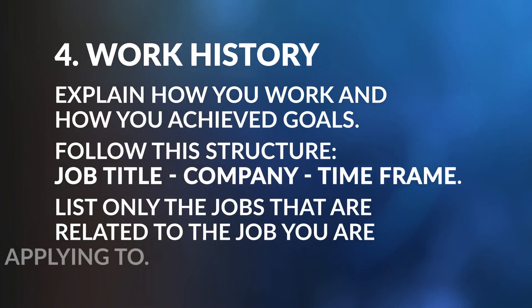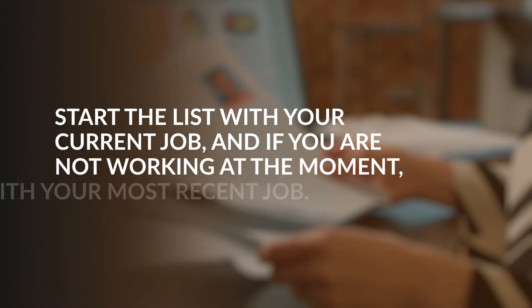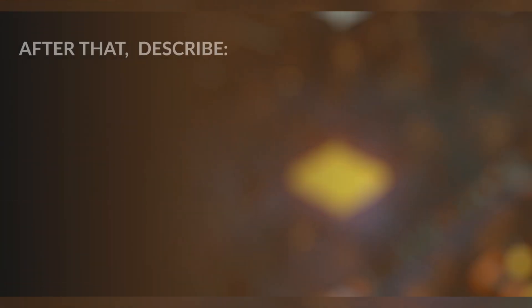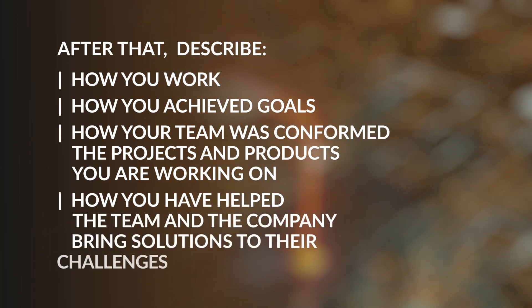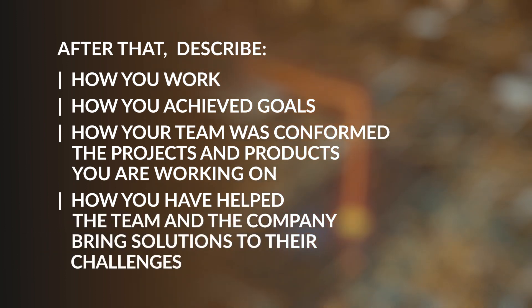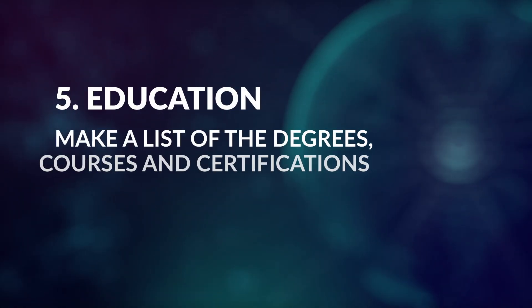Number four: work history. Explain how you work and how you achieved goals. Follow this structure: job title, company, time frame. List only the jobs related to the role you are applying to, starting with your current or most recent job. Describe how you work, how you achieved goals, how your team was formed, the projects and products you worked on, and how you helped the team and company bring solutions to their challenges.